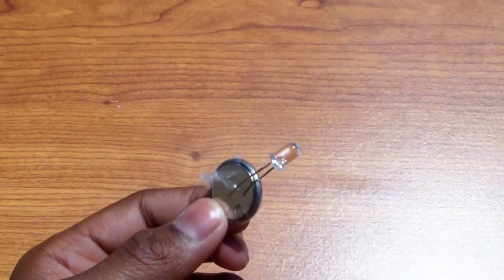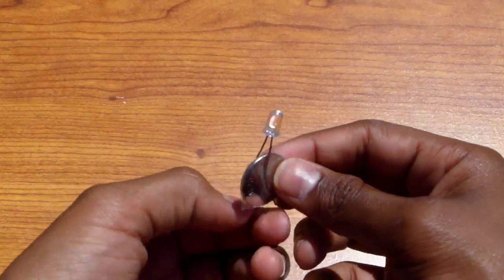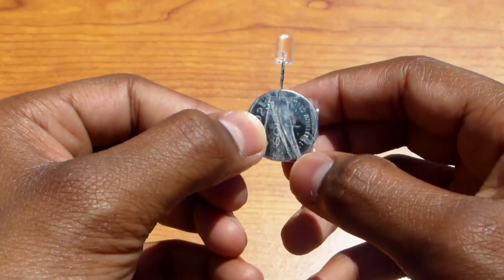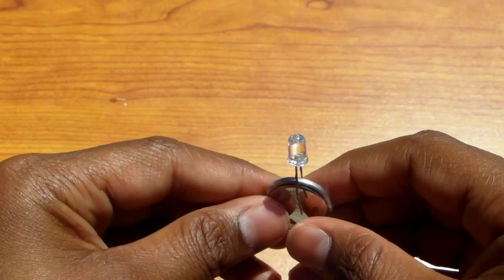I taped the battery and the LED light together and the long side of the LED light goes to the positive side and the short side goes to the negative side. So when you press this, the LED light turns on.